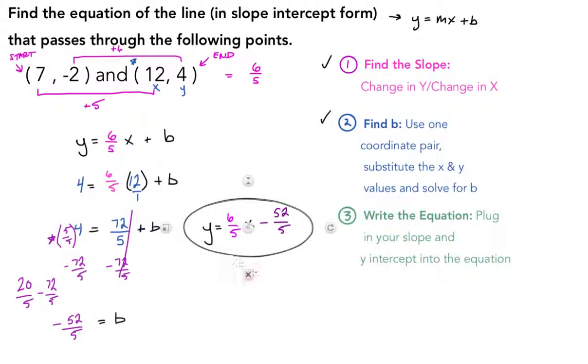The process doesn't change just because there are fractions involved. It still comes down to these three steps, but just be careful right here when you have to subtract a fraction like this. Remember that you need common denominators—it's going to be the most helpful thing that you can do to help you get the right answer. So here is an equation in slope-intercept form given two points, and we have a fractional slope and a fractional y-intercept, and I hope that the example helped you out.